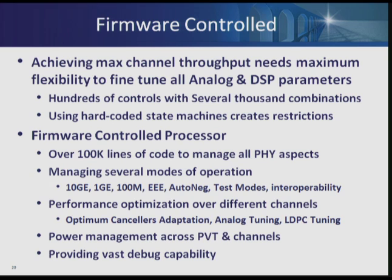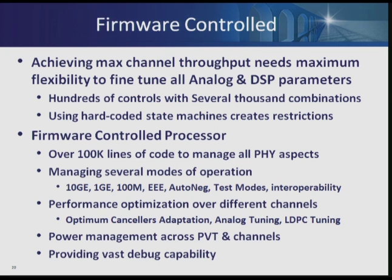All of this is done through firmware control. We have a controller that uses firmware with over 100K lines of code. It took us about a year to really optimize and come to the best performance — fine-tuning calibration in both analog and digital to actually meet the performance. There was no way we could use hard-coded state machines as was done in gigabit; that was a failure on others' side. This firmware was a huge achievement to get the 10G performance we needed.